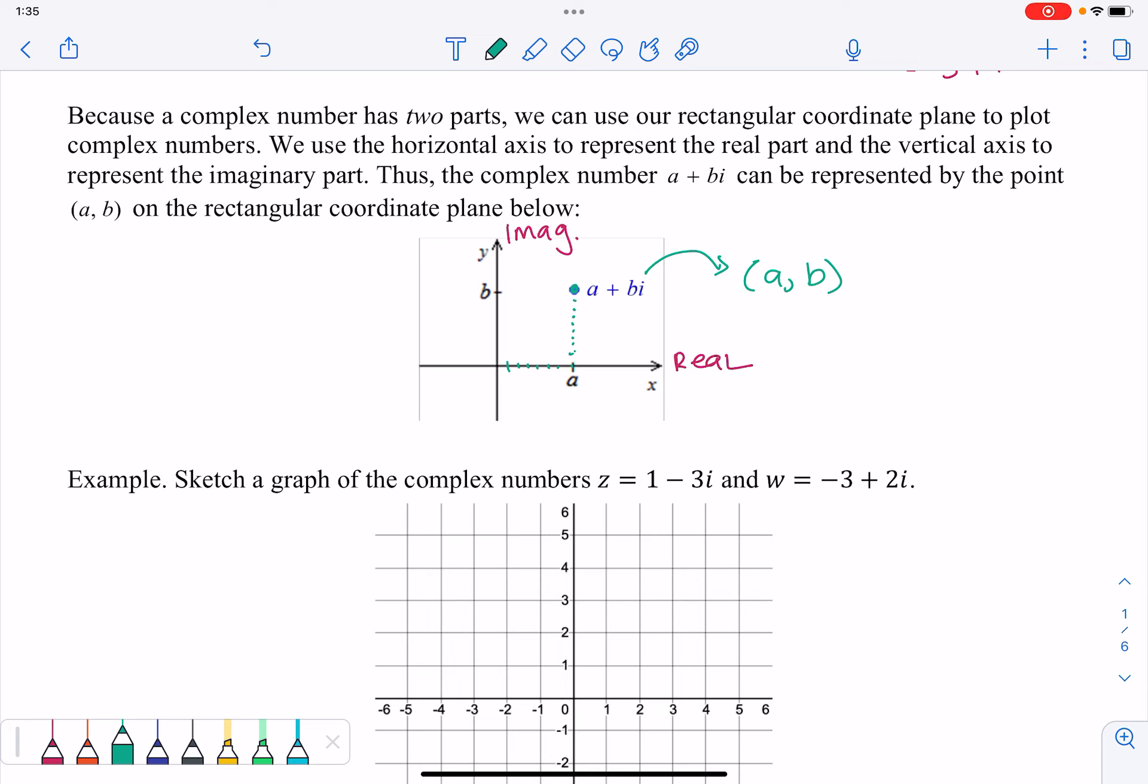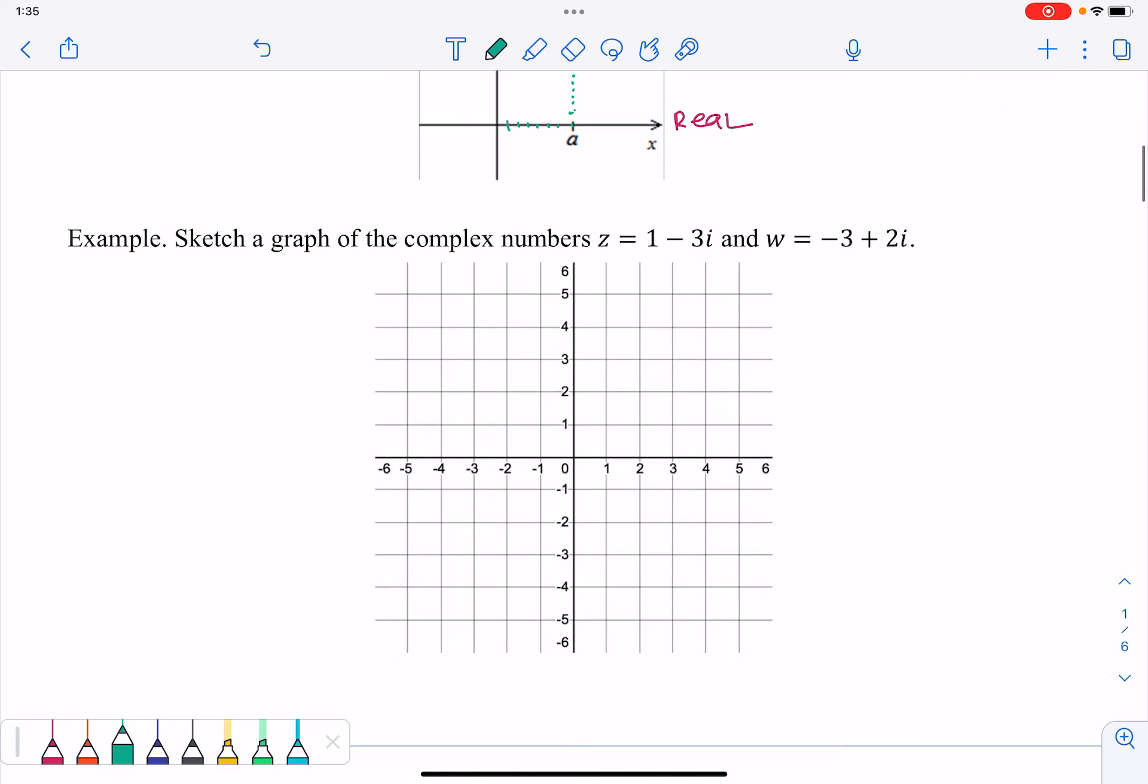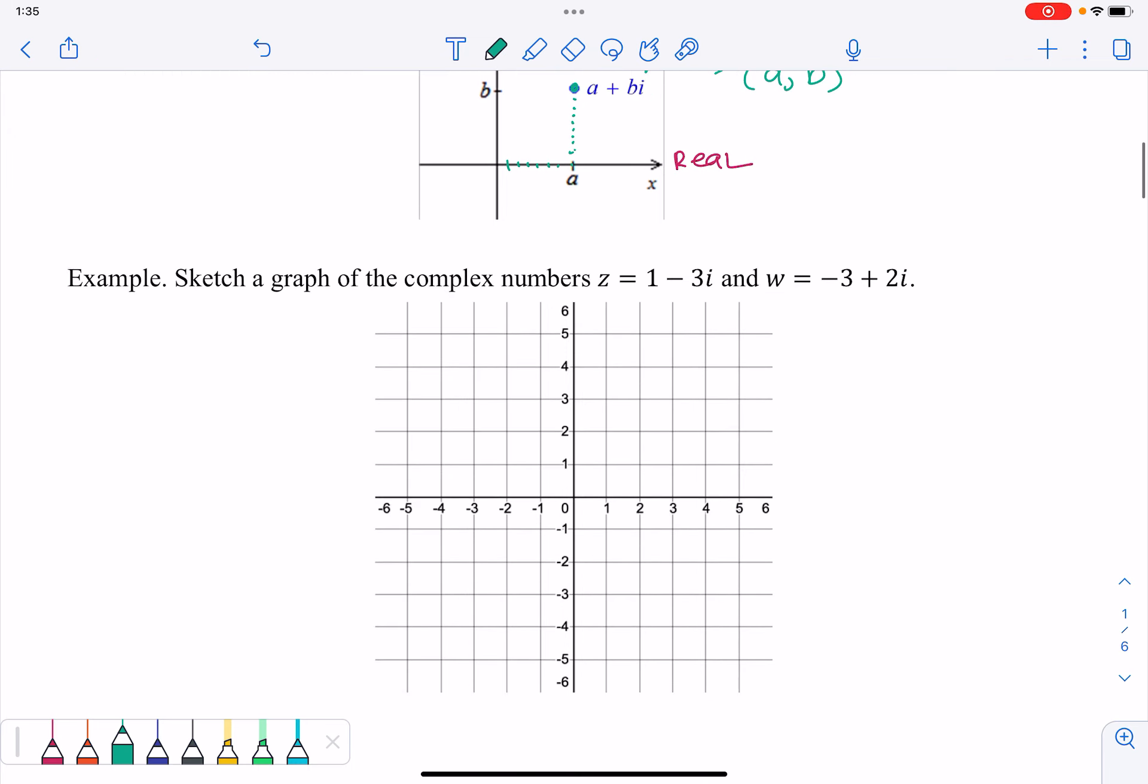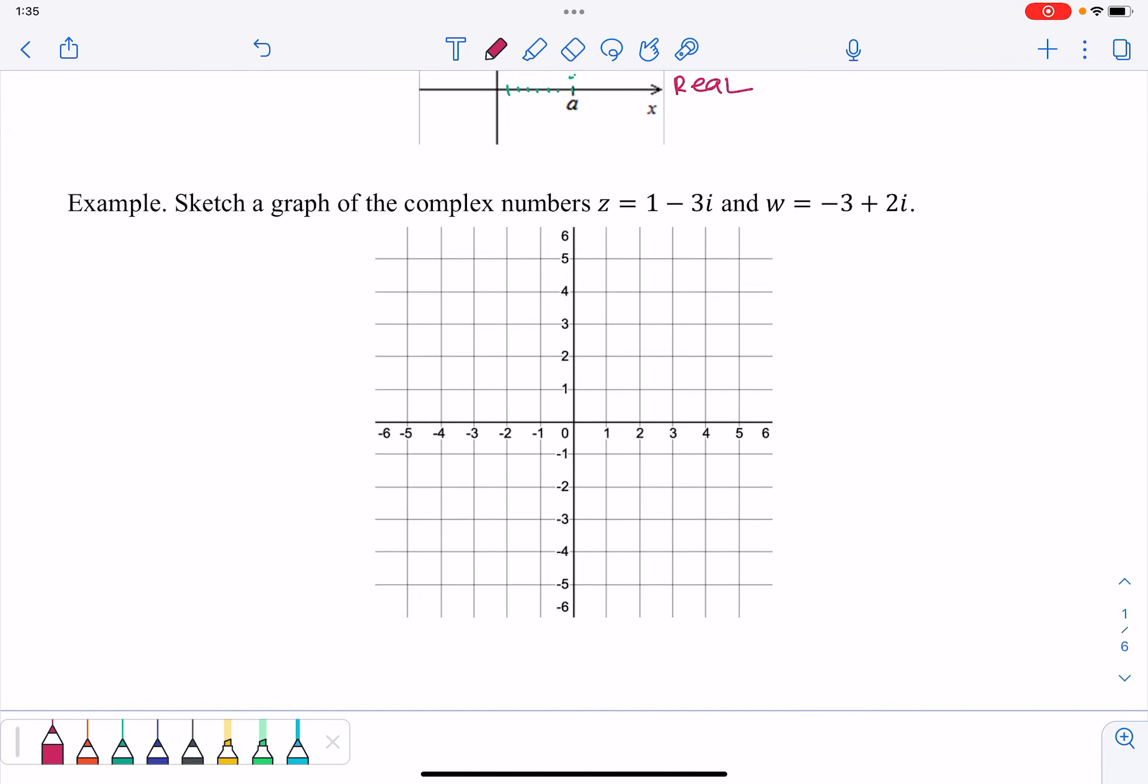So sketch, example, sketch a graph of the complex numbers Z equals 1 minus 3I and W equals negative 3 plus 2I. So again, I have my real axis here and my imaginary axis here. So if we're asked to plot complex numbers, let's start with Z, 1 minus 3I. So I'm going to go to the right one and then down 3.